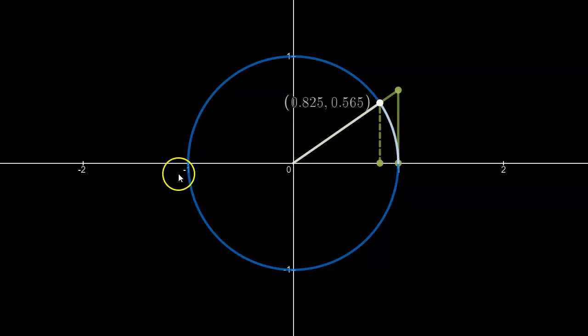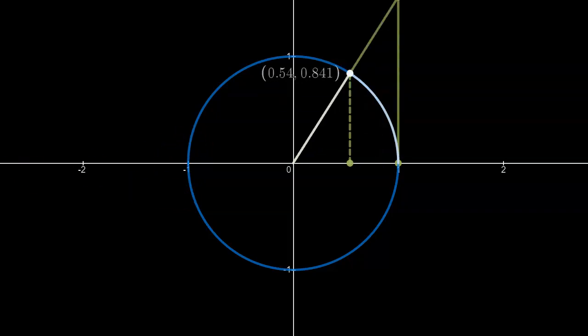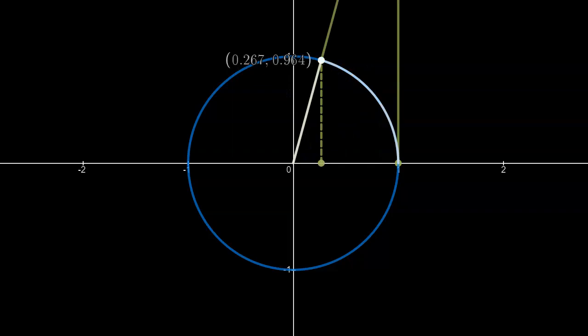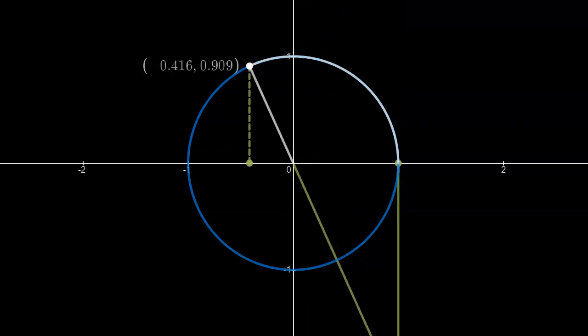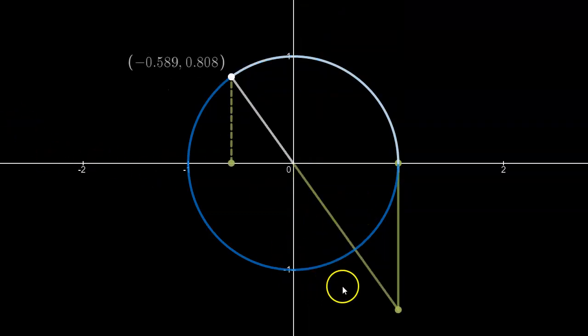So as the angle increases in quadrant 1, the ratio gets larger and larger, as indicated by the height of this triangle. Watch what happens as we enter subsequent quadrants. First, you'll notice that the similar triangle is now graphed in the lower right-hand corner of the coordinate plane. Well that's because we expect to have negative values of the tangent ratio in quadrant 2.